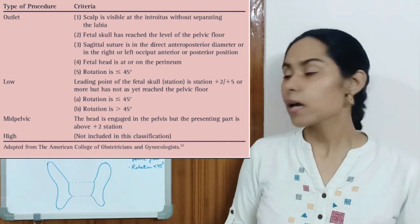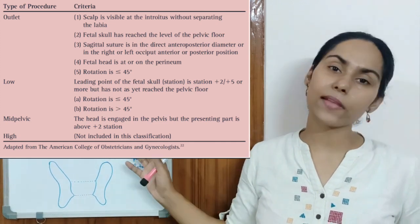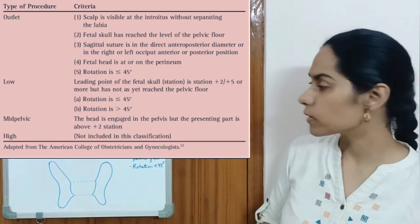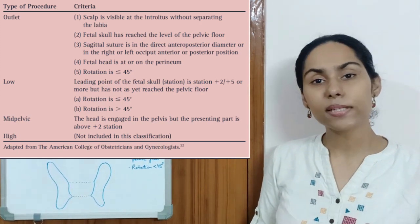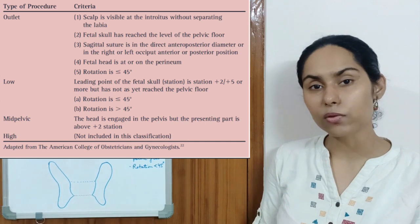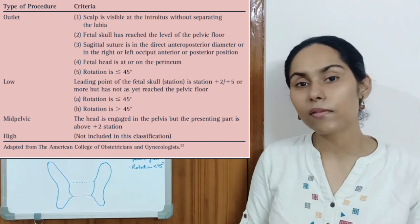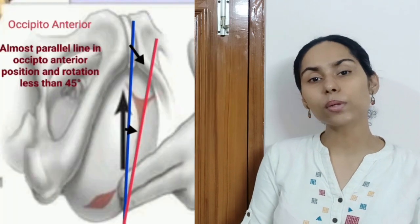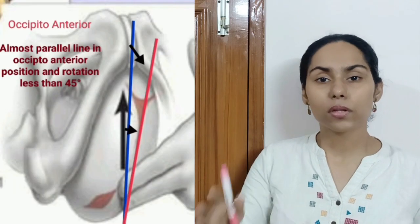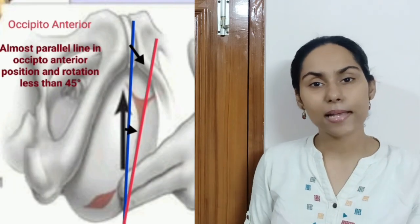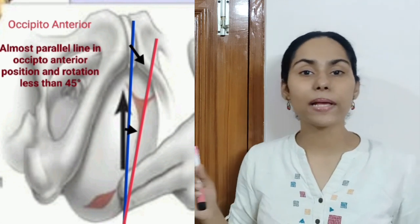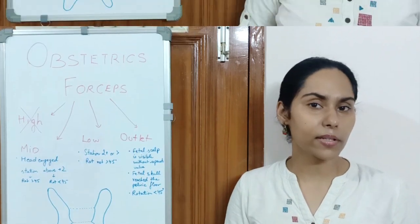The next is the low forceps and the outlet forceps. In low forceps, the station of the fetus can be more than plus two but not till the level that the fetal skull has reached the pelvic floor. And also we consider the rotation over here. The rotation of the sagittal suture in relation to the AP diameter of the pelvic outlet should be less than 45 degrees.